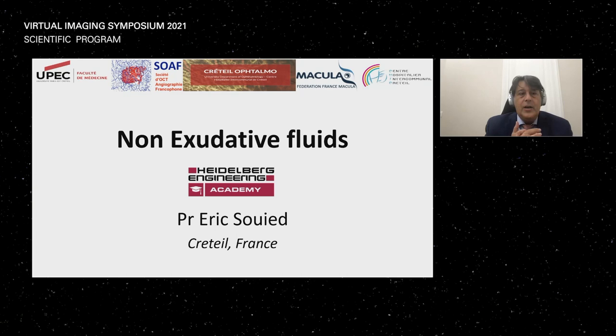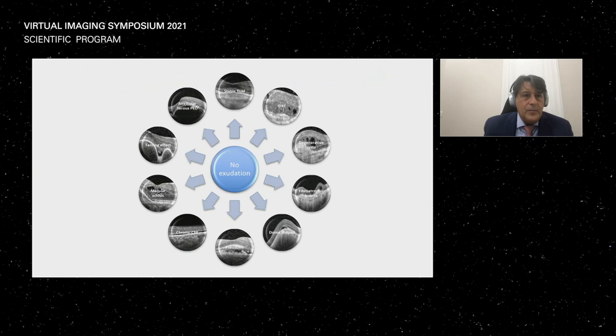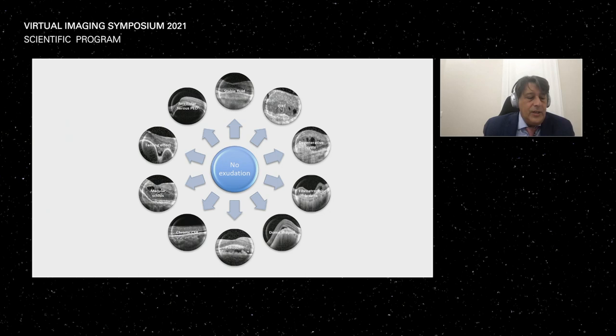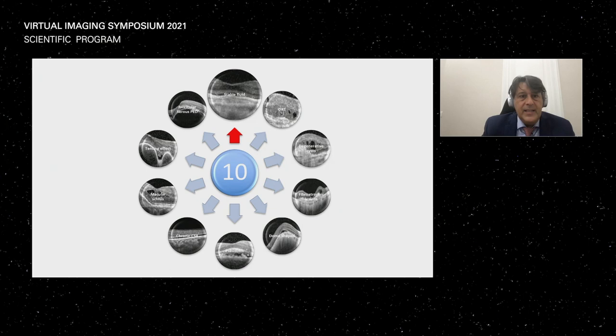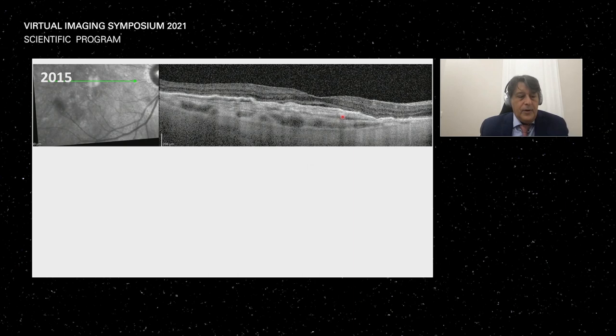It's just an overview about all the cases in which on SD-OCT we observe some hyporeflective lesion — hyporeflective fluid — that in fact are not exudative fluids, are not active exudative fluids. So this is my disclosure. I chose 10 cases, 10 conditions that are much more frequent conditions in which we can observe this kind of lesion.